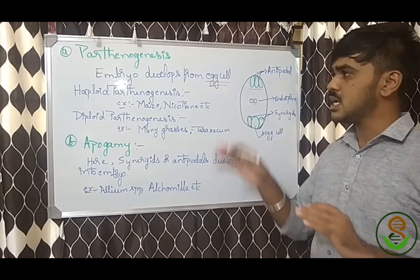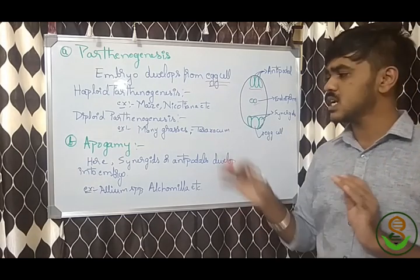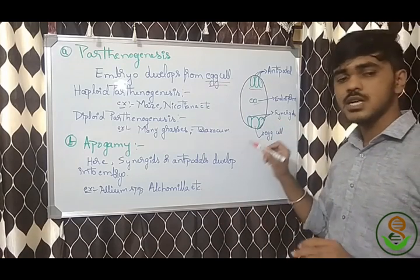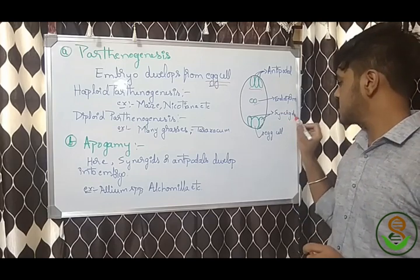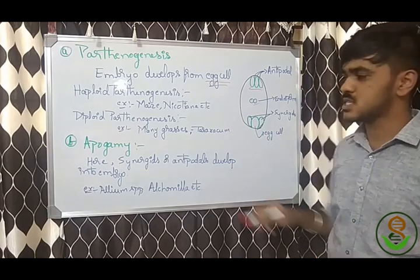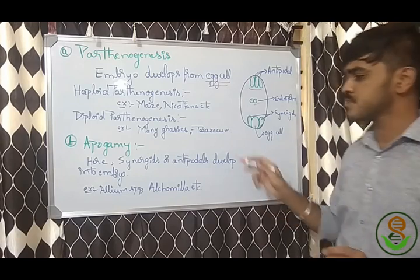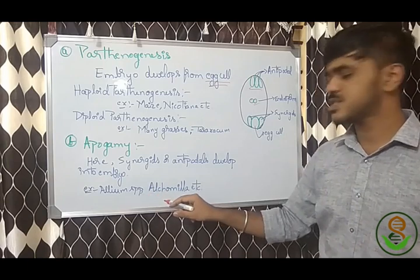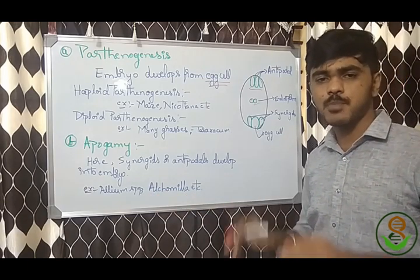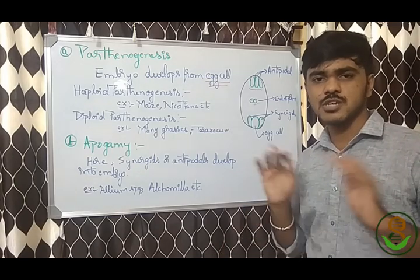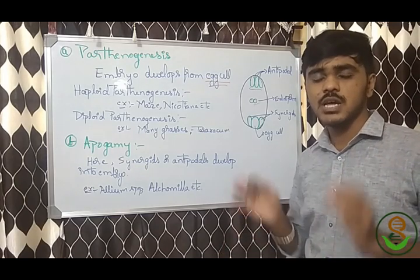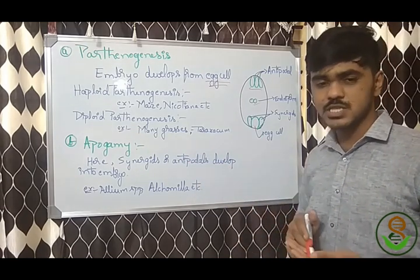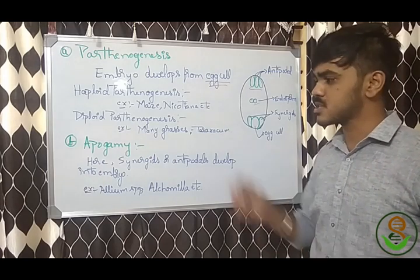Next is apogamy. In parthenogenesis the embryo develops from the egg cell; in apogamy it develops from non-egg cells such as synergids or antipodal cells. Example is Alchemilla. Here too, haploid or diploid condition depends on which cell formed the embryo sac. These — parthenogenesis and apogamy — are the types of diplospory.